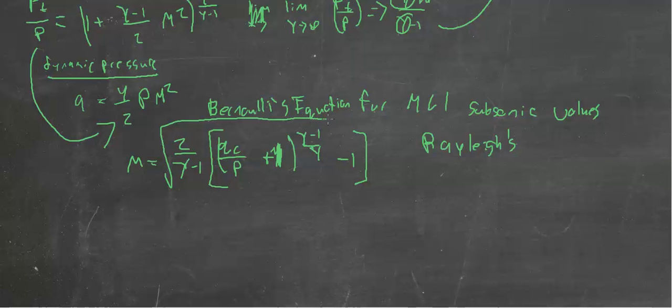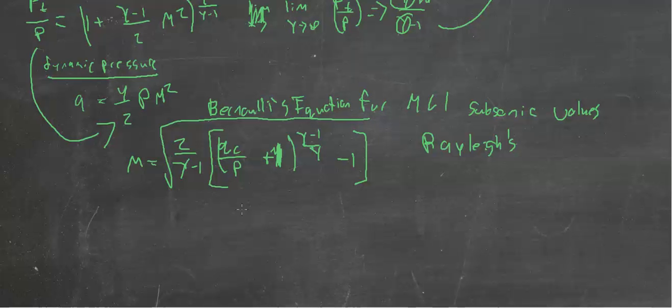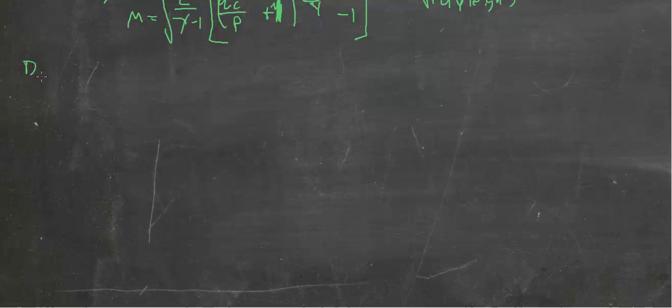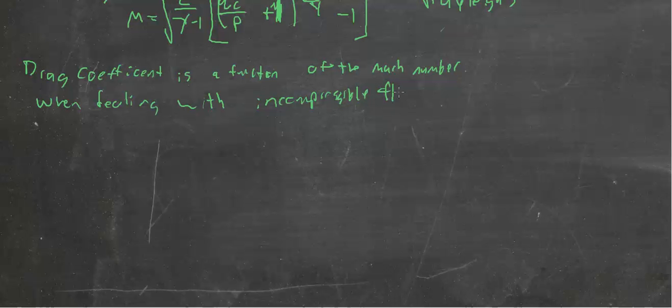And of course, we get M squared, we take the square root of the whole value. Now, we also have to consider our drag coefficient, because the drag coefficient is the function of the Mach number when dealing with an incompressible flow. It's kind of irrelevant, but we could just say for its case that it would be the same. This would be the force of the drag coefficient.